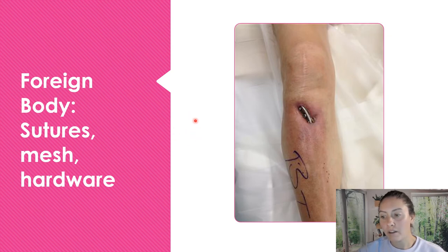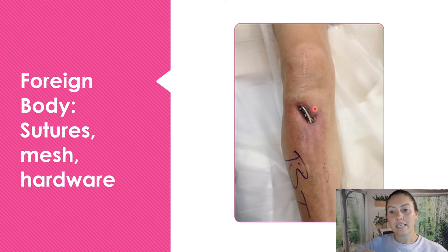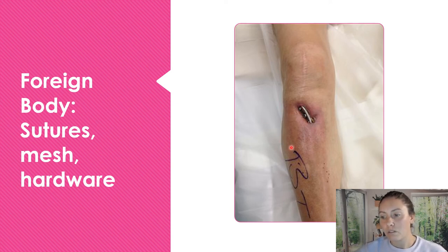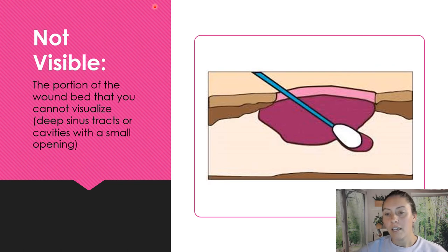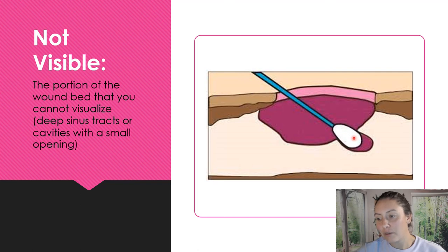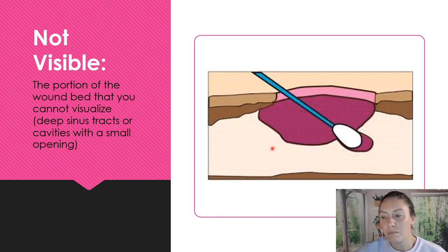Next we have foreign body — you can see a piece of hardware here sticking out of the leg. But sometimes you have a wound and you can see a mesh or an appliance that's not actually sticking out; you can just see it in the wound base. Either way it is a foreign body. Then we have non-visible — this was kind of hard to put into picture form. Depending on how deep the tunnel goes, like if it went down to about here, you wouldn't be able to see it — so that's non-visible, your deep sinus tracks.